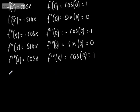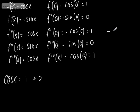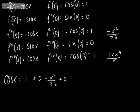So our expansion: cos x equals f of 0, which is 1, plus f dashed of 0 times x, which is 0, plus f double dashed of 0 times x squared over 2 factorial, giving minus 1 times x squared over 2 factorial, so minus x squared over 2 factorial. The next term gives plus 0, and then 1 times x to the fourth over 4 factorial, giving plus x to the fourth over 4 factorial, and so on.